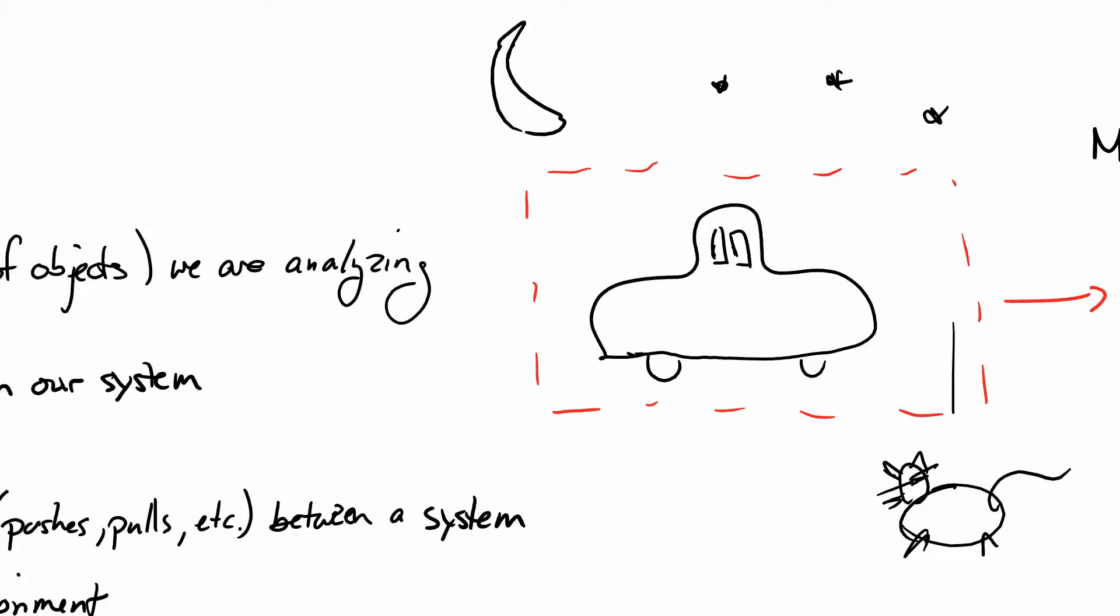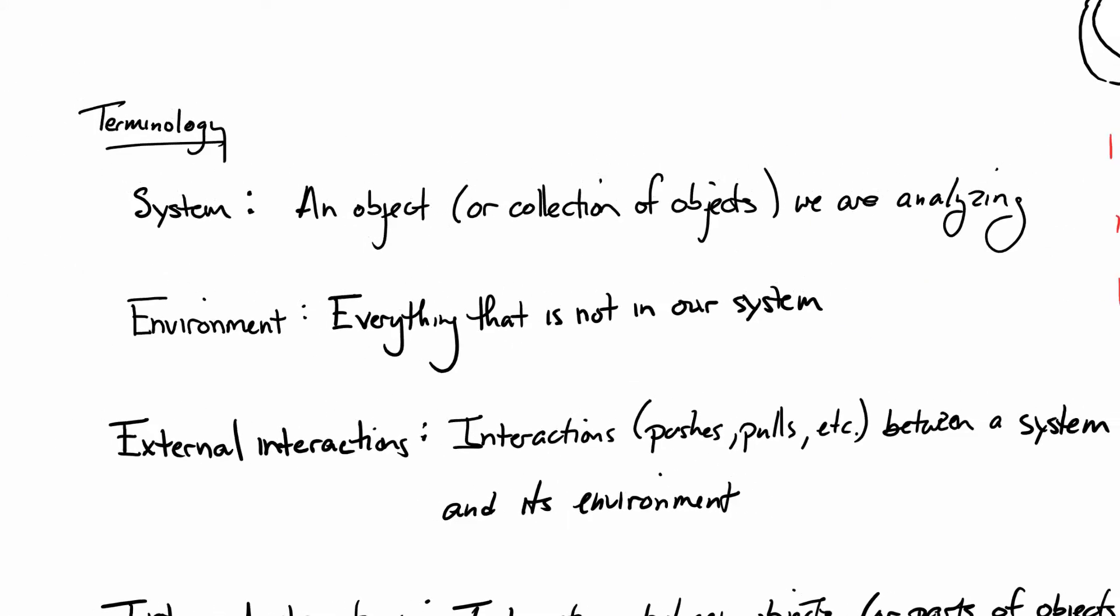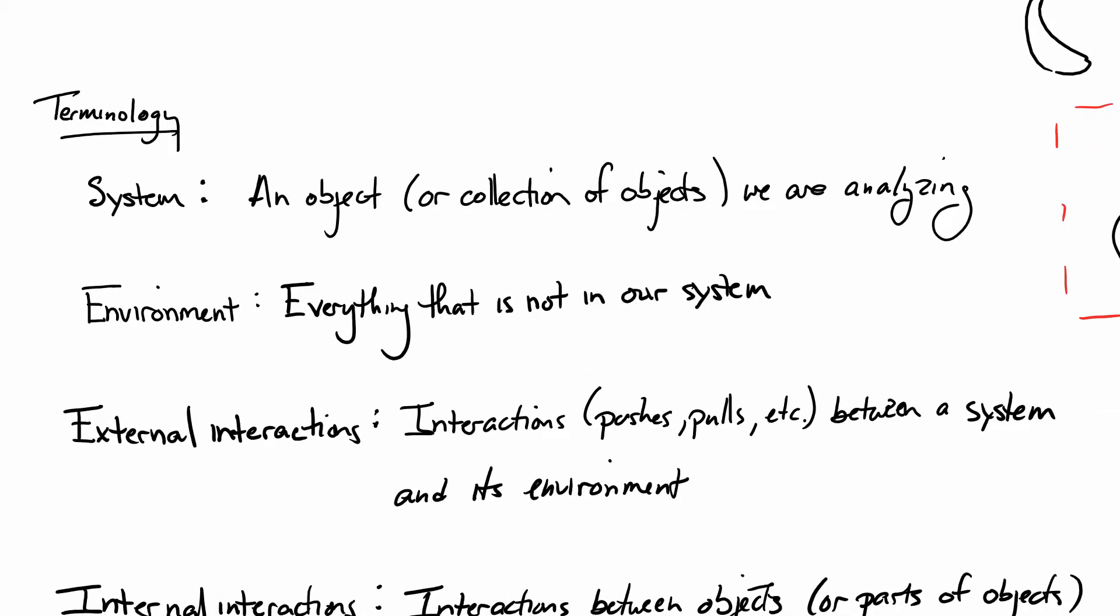All of these things are in my environment. They are outside of my system. That means they can interact with my system. And so, we're going to call these things our external interactions. Interactions being pushes, pulls, any kind of contact between a system and its environment.